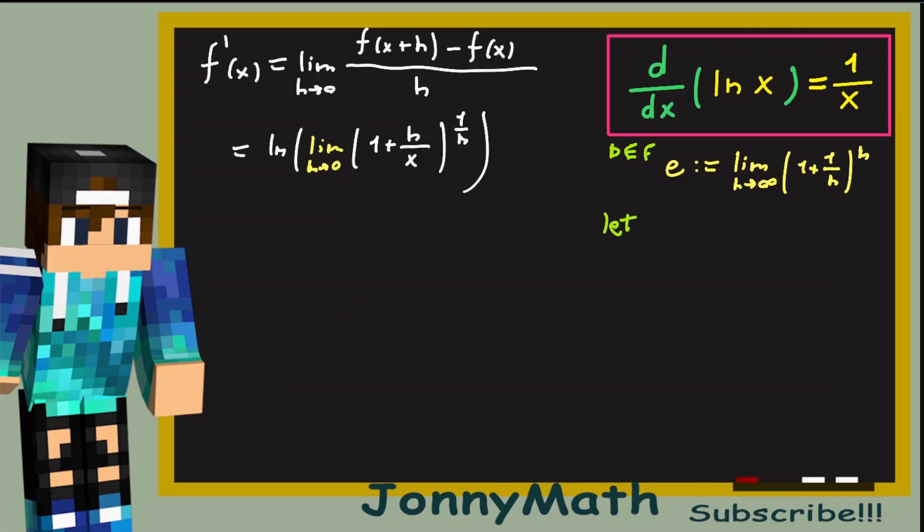So, now let's do a substitution. Let t be equal to 1 over h. Okay, notice how when h goes to infinity, t goes to 0. So, we get that e equals the limit as t goes to 0 of 1 plus t to the 1 over t power.